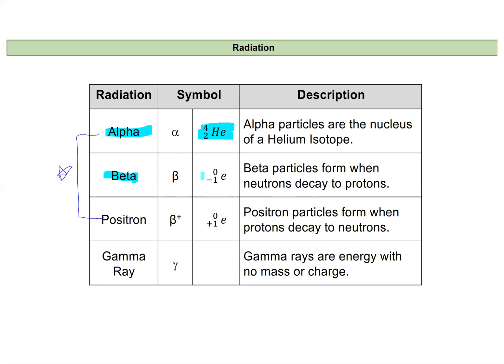Beta particles, which are essentially an electron. The nucleus kicks an electron out of it, which is interesting because there shouldn't be an electron in a nucleus. We'll talk about this a bit more. Positrons are the opposite of electrons. They're small particles with positive charge, but very little mass.